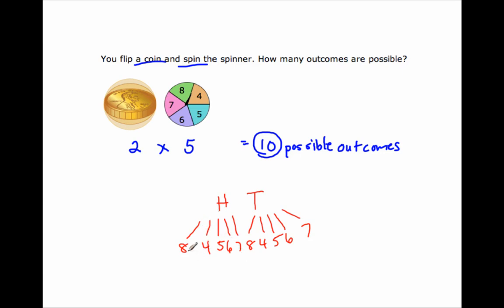And if you can see, there are ten of them: one, two, three, four, five, six, seven, eight, nine, ten possible outcomes. Though this task is just determining how many — don't list them unless you're told to list the outcomes or asked what are the outcomes.